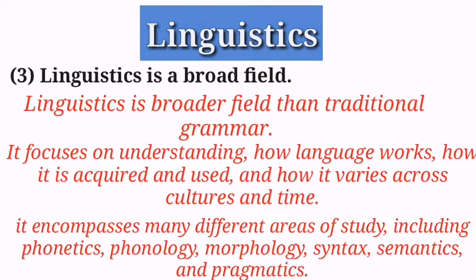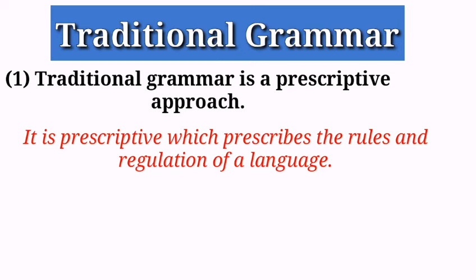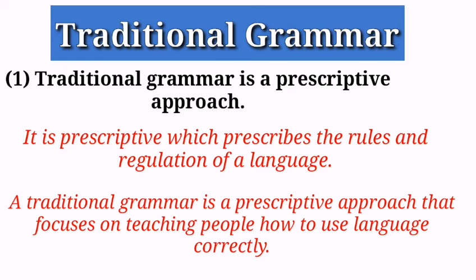Traditional grammar is a prescriptive approach. Linguistics is descriptive because it only describes a language, while traditional grammar is prescriptive — it prescribes the rules and regulations of a language and dictates how a language should be used. In other words, traditional grammar is a prescriptive approach that focuses on teaching people how to use language correctly, based on a set of rules and conventions considered to be standard.